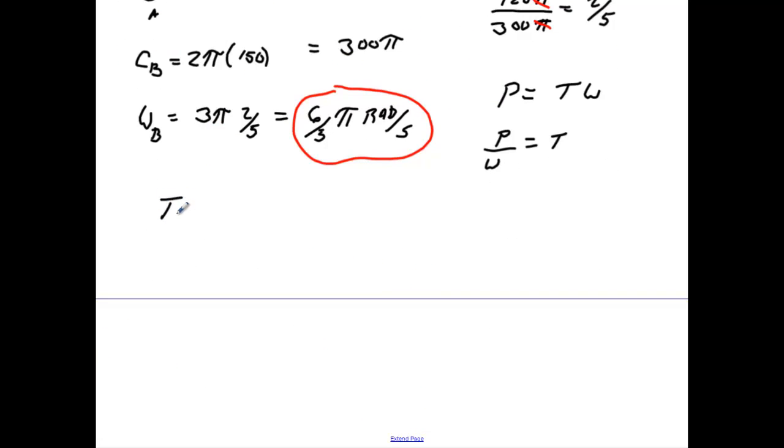So we can say the torque at A is going to be the power which will be 300 watts. And no conversion to be made with that. We will divide that by the angular velocity, which we said was 3π. That'll give us 31.83 newton meters.